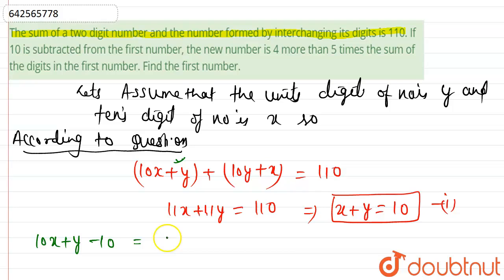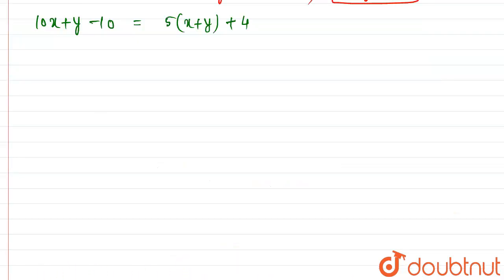So we need to find the first number. Let's solve this equation: 10x plus y minus 10 equals 5 times (x plus y) plus 4. From equation 1, x plus y equals 10.